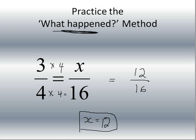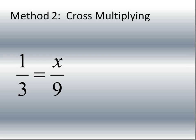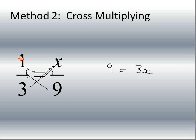That's how the 'what happened' method works — you look at the two numbers you have. The trick is you have to know your multiplication tables pretty well. The second method is cross-multiplying, which we're going to use quite a bit in the future. You take the numbers across from each other and multiply them. So one times nine is nine, and three times x is 3x. Then you solve for the variable x. Since 3x means three times x, I divide both sides by three. Nine divided by three is three, so x is equal to three.